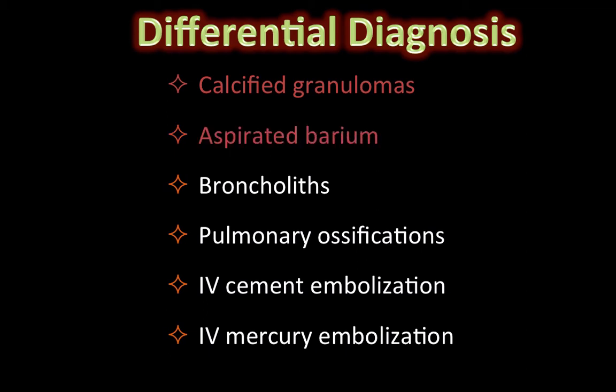Aspirated barium is actually a potential consideration in this case. It's usually extremely dense on chest radiographs, but it would typically follow the distribution of airways. Broncholithiasis is another possibility that could give hyperdense abnormalities on chest radiographs. These are usually calcified lymph nodes that erode into the lumen of airways, typically associated with other features of remote granulomatous exposure.